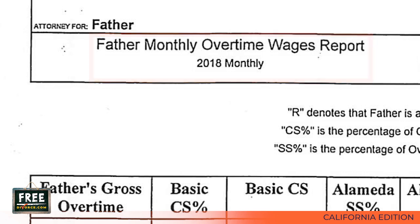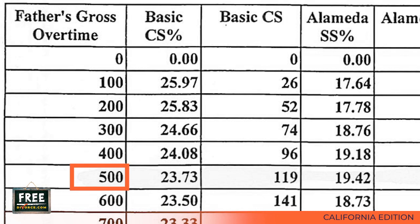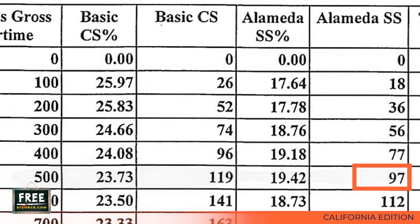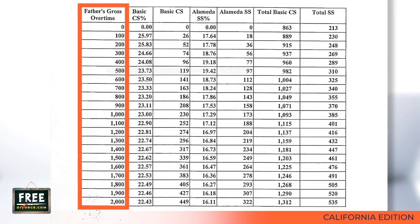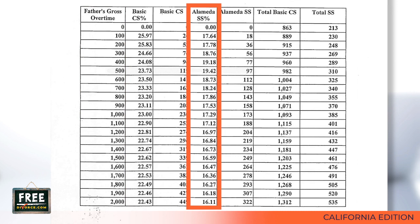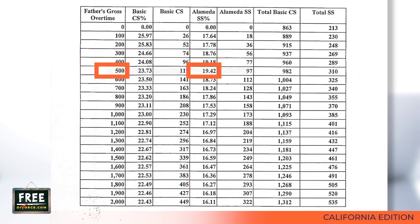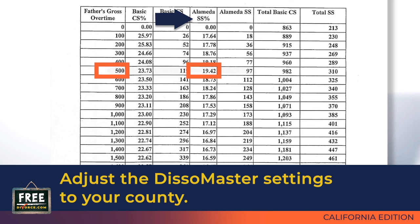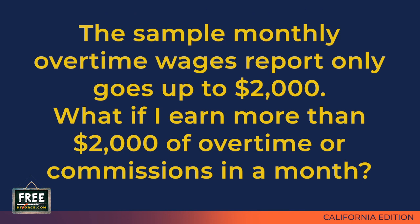This report calculates how much extra spousal support should be paid when the husband or father receives additional overtime or commission income. For example, if the father earns $500 of overtime income in a particular month, the chart indicates he should pay the wife 19.42% of the gross amount of that income, or $97, as additional spousal support. You look down the column labeled Father's Gross Overtime to the $500 figure, then go across to the Alameda SS Percentage column showing 19.42% — we have highlighted these numbers. The label says Alameda because this case was run for an Alameda County case, and SS Percentage stands for Spousal Support Percentage.